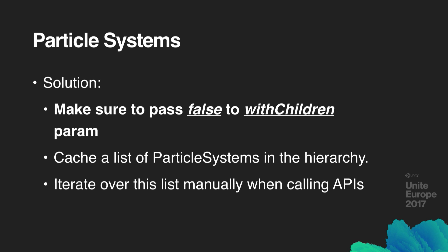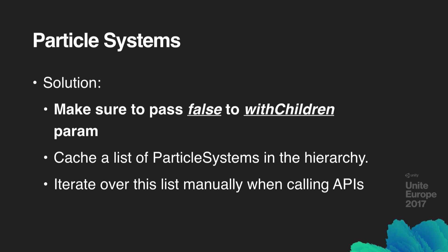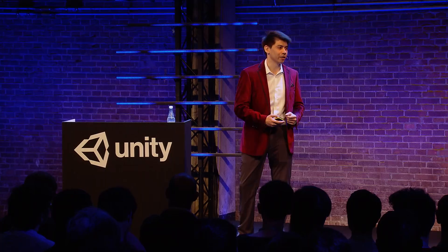It's common for VFX artists to create visual effects that have particle systems spread across several child transforms, so you may actually want to start and stop all of them at the same time. Apply the old standard Unity remedy for GetComponent calls: cache a list of them at initialization time, then call Start, Stop, or IsAlive on each in turn — making sure to pass false as the WithChildren parameter.